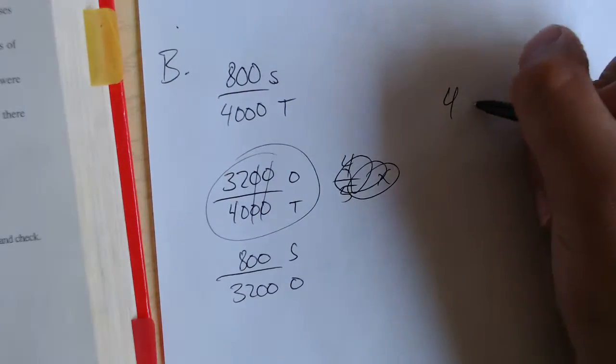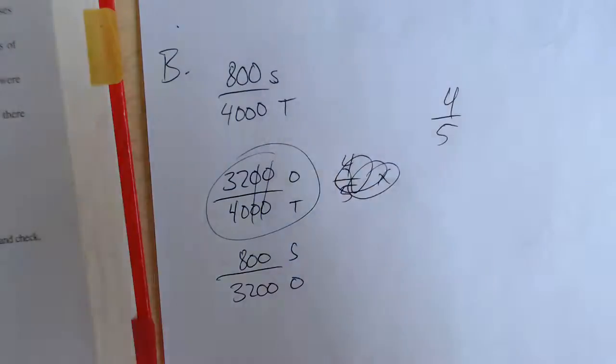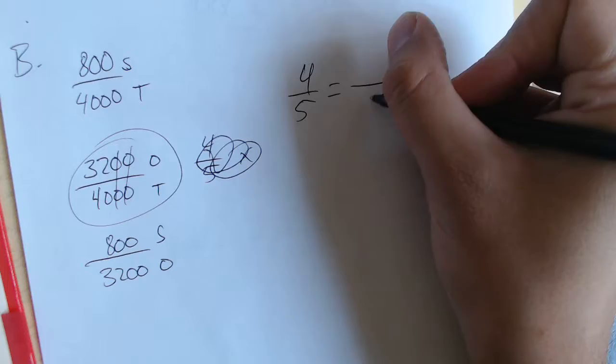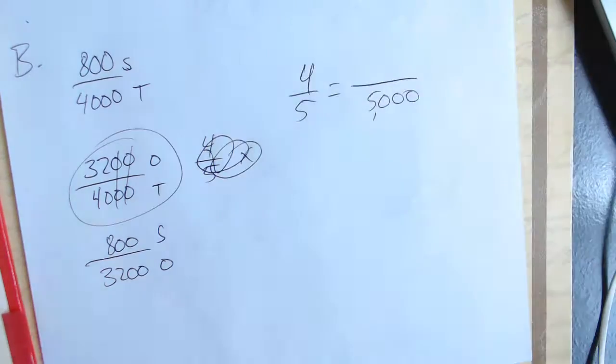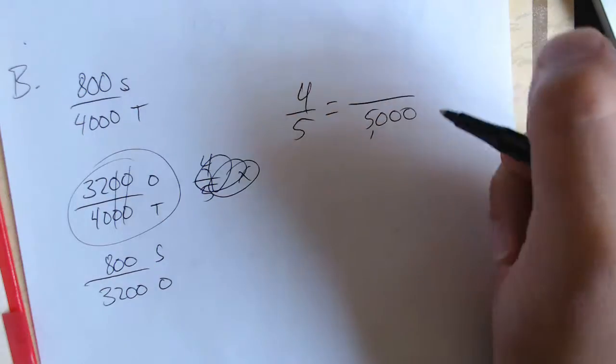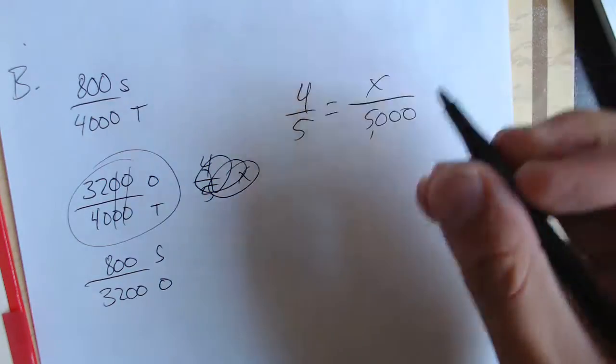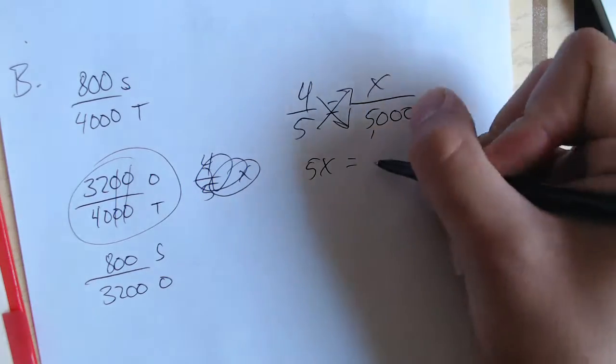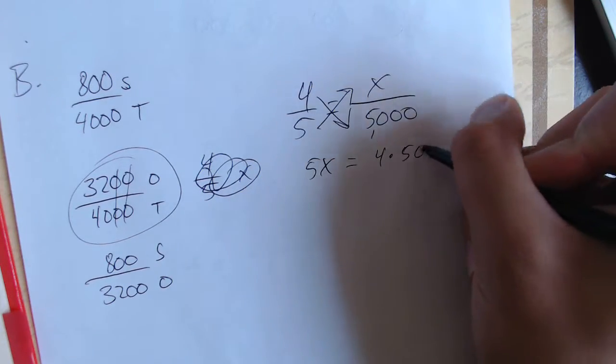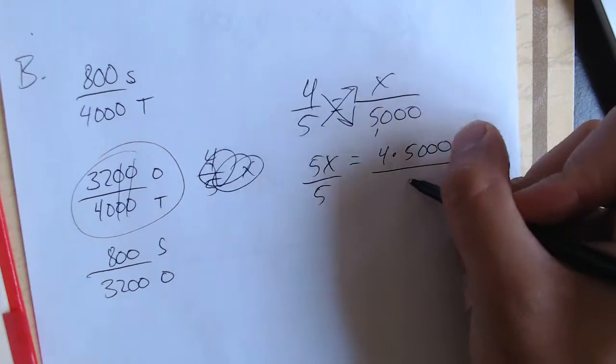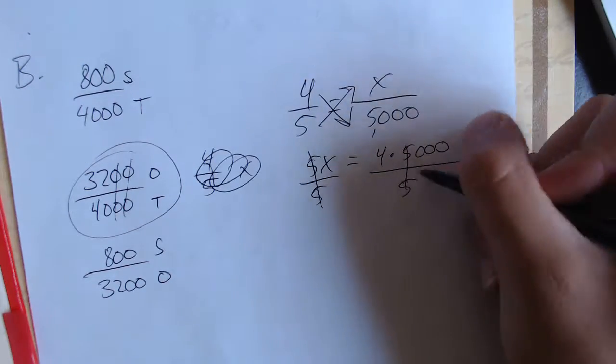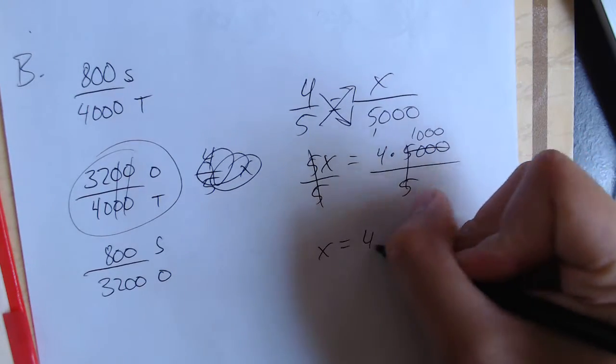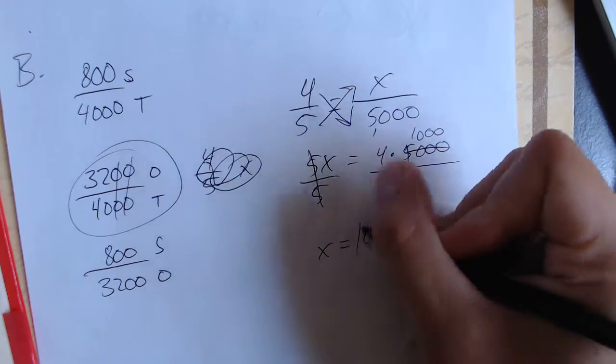So we'll use the ratio of 4 over 5. And they tell us that the new compound is going to have a total of 5,000 kilograms. So if the new compound has 5,000 kilograms, we have to find out the amount of other stuff. We do that by cross multiplying. We get 5x equals 4 times 5,000. Divide each side by 5. That cancels. That becomes 1,000. 4 times 1,000 is 4,000. And that's our answer for that.